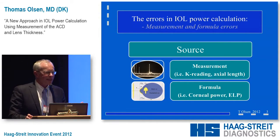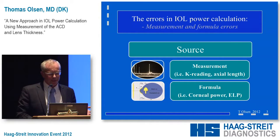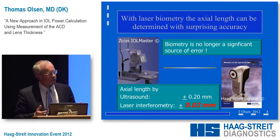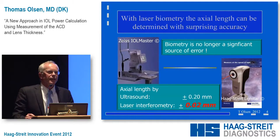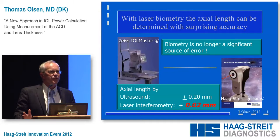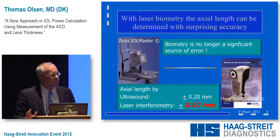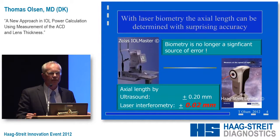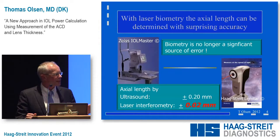Just think about it. We have the measurement errors and we have the formula errors. But also you have to realize that since the introduction of laser biometry around 2000 — the IOL Master came — we had a new scene, because the accuracy with laser biometry is so incredibly high. If you have a standard deviation of about 20 microns on the axial length, this will translate into an error in the refractive plane, the spectacle plane of the patient, of less than a tenth of a diopter.